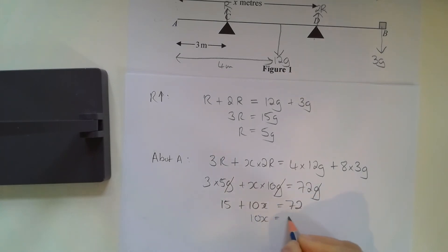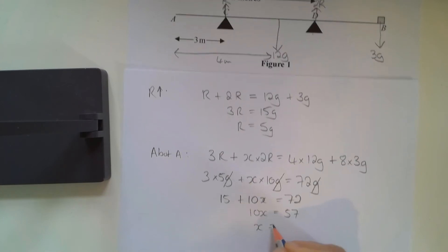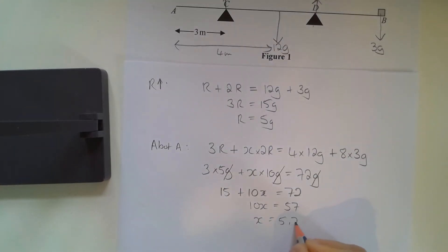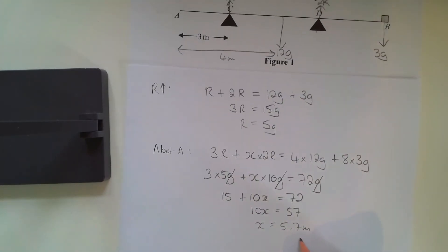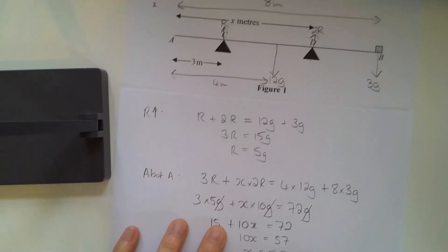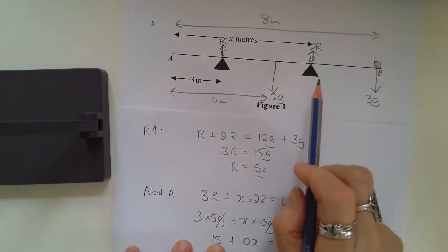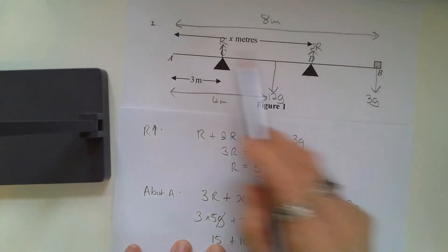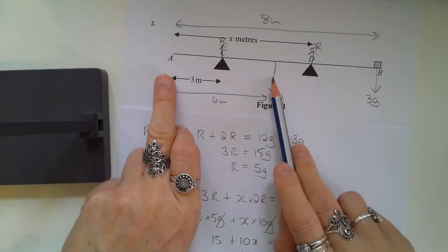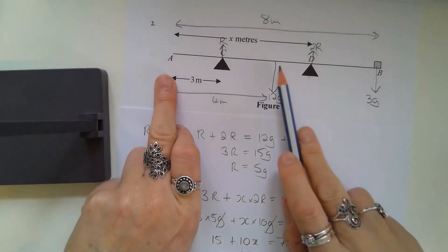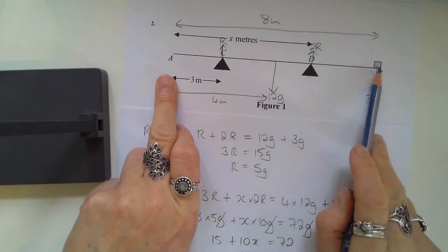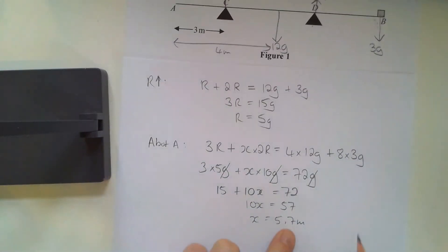And x equals 5.7 meters. I'm just going to check that to see whether it's reasonable or not. I'm trying to find the distance x from A to here. I know that this distance is 4 and this distance is 8, so I'm expecting a distance between 4 and 8, and indeed that's between 4 and 8.